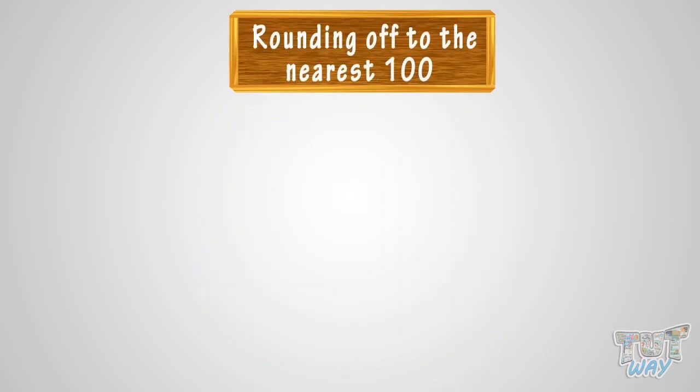Now let's learn what is rounding off to the nearest 100. Here we have a few numbers: 12, 68, 123, 167, 199. We have to round them up to the nearest 100. Let's start with 12.